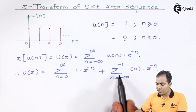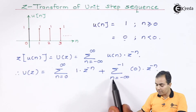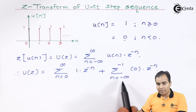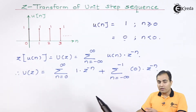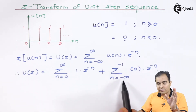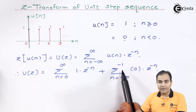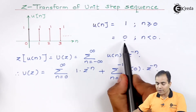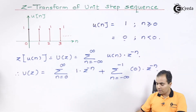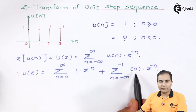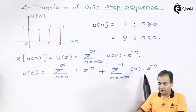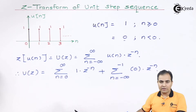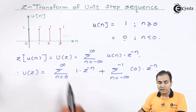When n is on the left-hand side — from minus infinity to minus 1 — the amplitude of u(n) is 0. That is why I have substituted 0. Since 0 multiplied by anything gives 0, I am not going to write that function. I will solve only the right-hand part.